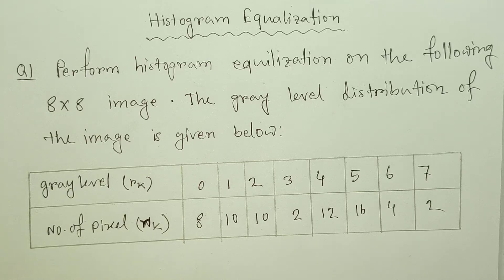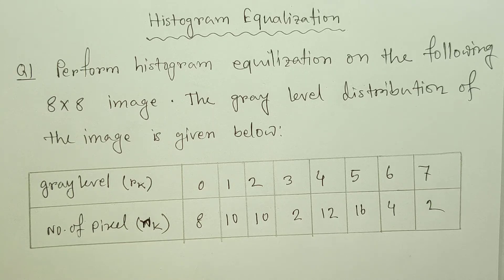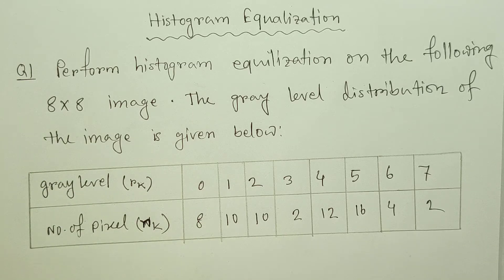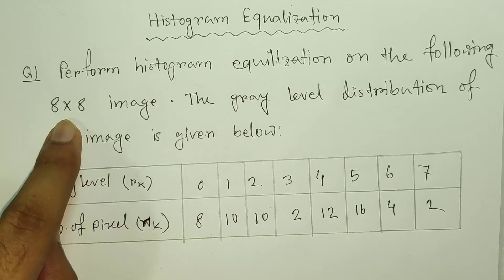I'm not in an over-contrast like a burnout zone, which is why I use histogram equalization to correct it. I'm taking a problem from histogram equalization on the following 8-bit image. The gray level distribution of the image is given below. You can have the gray level distribution — the question gives us the number of pixels.